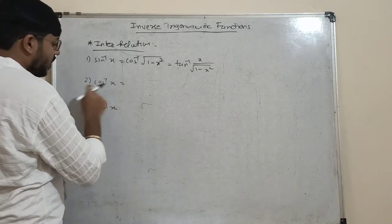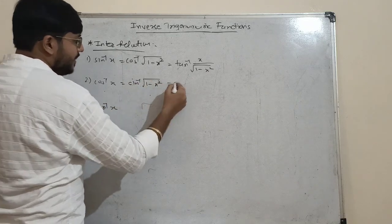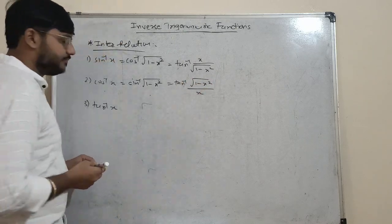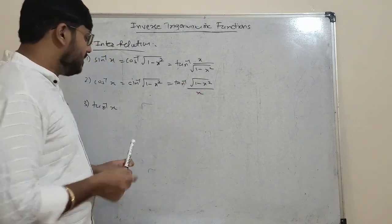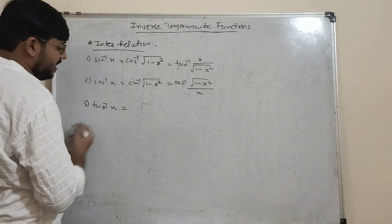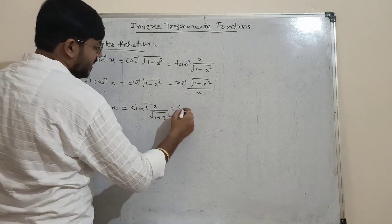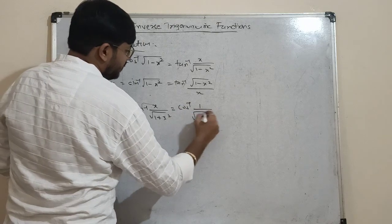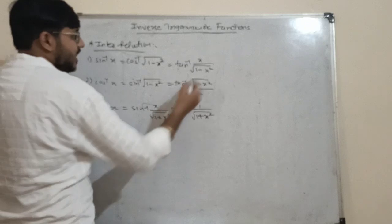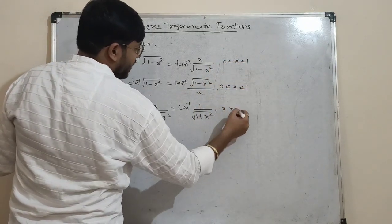cos⁻¹x can be written as sin⁻¹(√(1-x²)) and as tan⁻¹(√(1-x²)/x). tan⁻¹x can be written as sin⁻¹(x/√(1+x²)) and as cos⁻¹(1/√(1+x²)). The conditions for these are 0 < x < 1 and x > 0, which are very important.